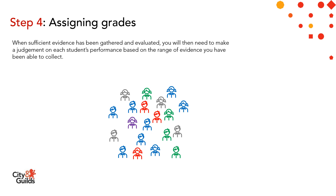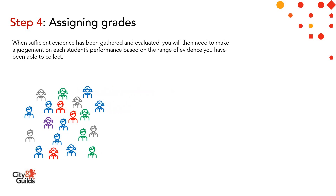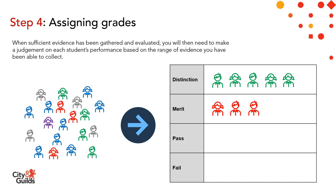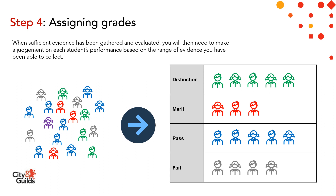Using the simplified example on screen, we have a cohort of 17 students. Let's assume we're looking at the evidence for marking their synoptic assignment. Using our marking grids, you'll use your judgement to assign each student a grade, which will reflect how the student has performed against the assessment objectives. In this case, evidence supports five students within the distinction grade, three students within the merit grade, five students at pass and four students at fail. These students will next need to be differentiated further into grade intervals for the synoptic assignment and exam component TAGs.